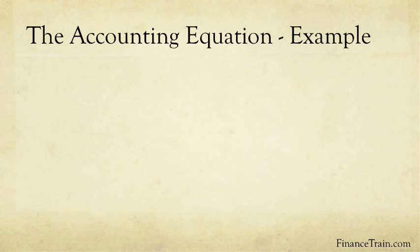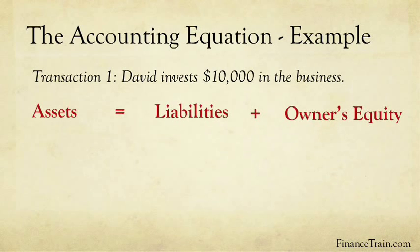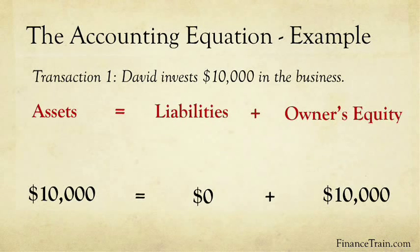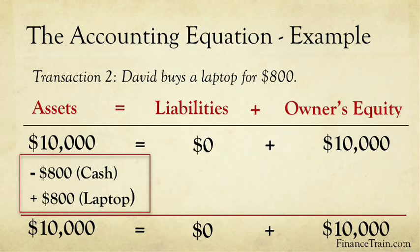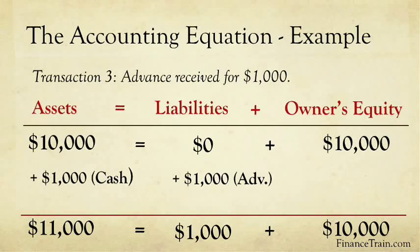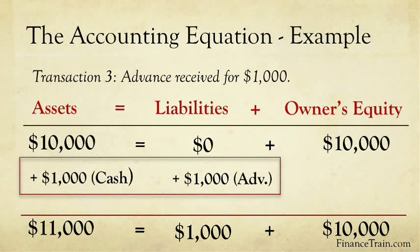Let's take the transactions at Web Design Inc. and see how they fit into the accounting equation. The first transaction occurred when David invested $10,000 in the business — this is the capital or owner's equity. An asset in the form of cash is created for the business. The next transaction is when David buys a new laptop for $800. Both the laptop and the cash paid are assets, so there is an increase in one asset and a decrease in another. The third transaction is when David receives an advance of $1,000. The cash received is an asset, but since the order is not yet fulfilled, this $1,000 will be a liability.